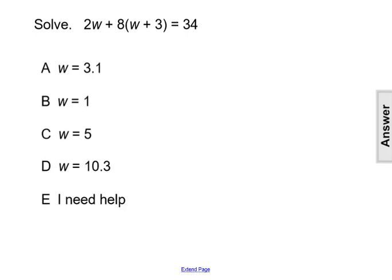In this particular equation, we have our variable w located in two different terms. We have it inside the parentheses with the plus 3, and we also have it out here with the 2w.